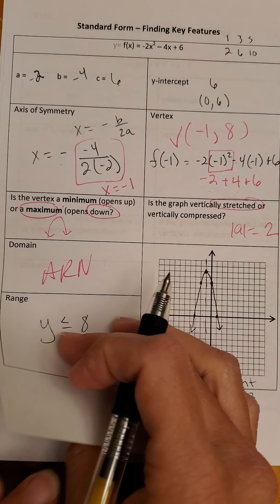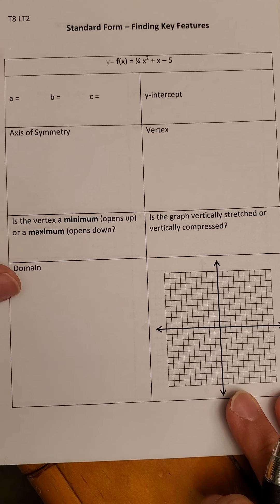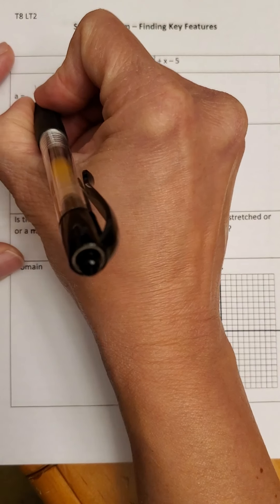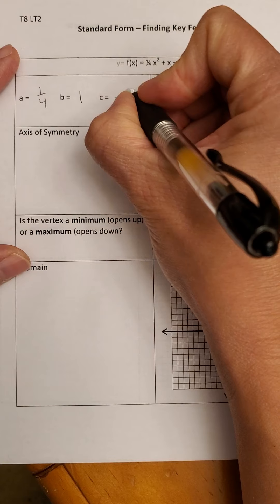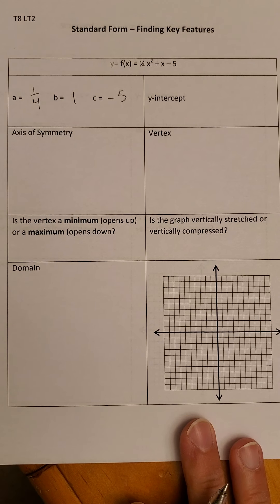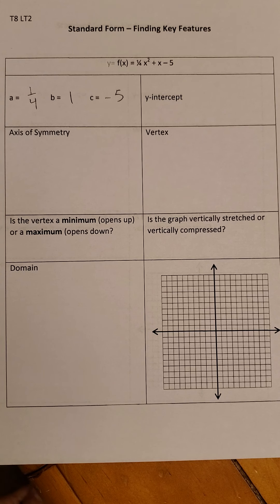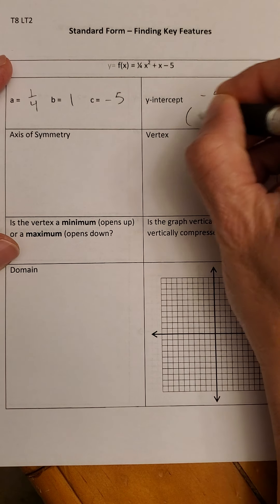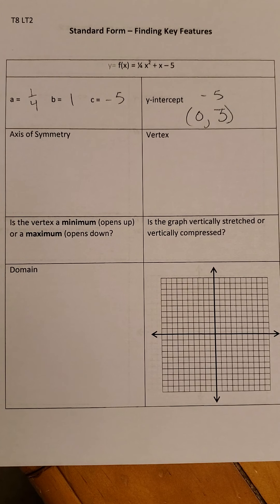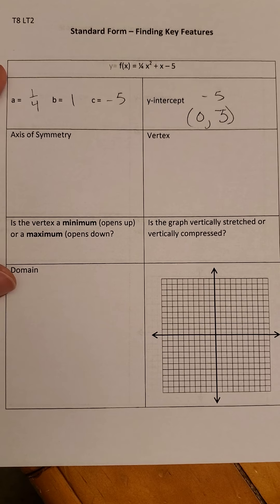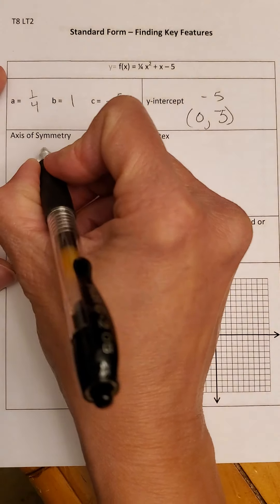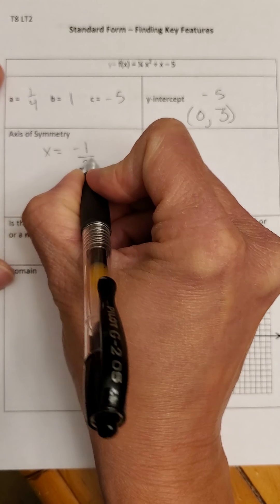Let's try another one. For this equation, our A is 1/4, our B is 1, and our C is negative 5. A lot of people get confused when B is 1 because there's no number visible in front of the X linear coefficient. Keep in mind: if there's no number in front of X, B is 1, because 1 times X is X. If there's no X at all, then B is 0. The Y-intercept is negative 5. Now for the axis of symmetry: X equals negative B over 2A, so X equals negative 1 over 2 times 1/4.